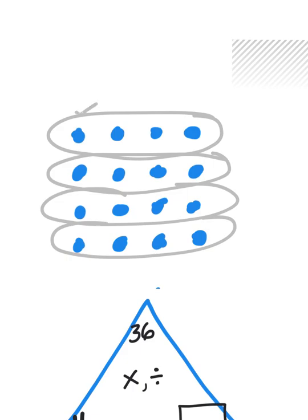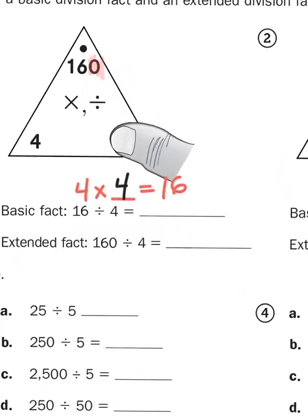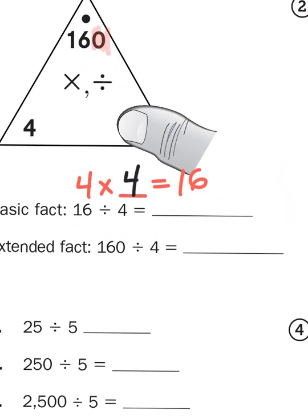And within each group, I have 1, 2, 3, 4 dots. So 16 divided into 4 groups would give me 4 in each group. So that is the reverse of this multiplication problem. 16 divided by 4 gives me 4.